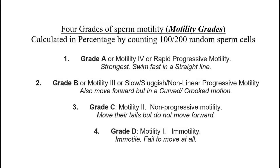Based on the extent of motility, human sperms are divided into 4 grades, also known as motility grades. The various grades of motility are calculated in terms of percentage by counting 100 or 200 random sperm cells. Grade A, or motility 4, sperm cells have rapid progressive motility — these are the strongest and swim fast in a straight line.